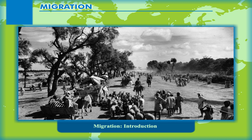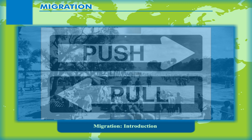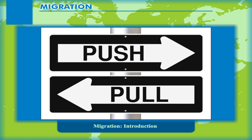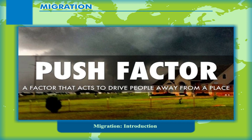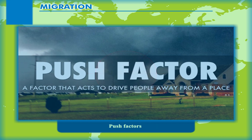Researchers divide factors causing migrations into two groups: push and pull factors. Push factors are things that were or are unfavourable about the area that one lives in, and pull factors are things that attract one to another area.